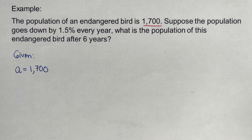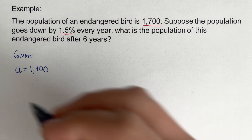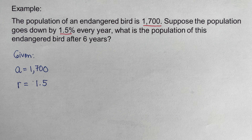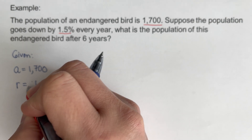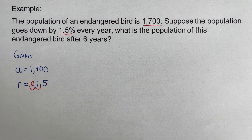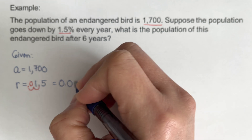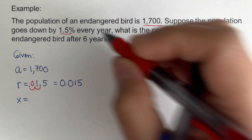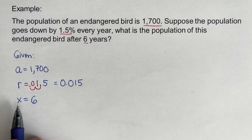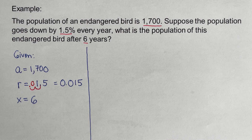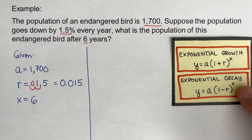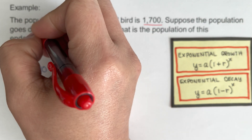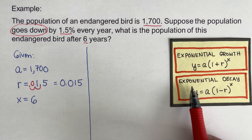We also have 1.5%, which represents the rate, so r equals 1.5%. We change this to decimal by moving two places to the left, or by dividing 1.5 by 100, giving us r equals 0.015. The problem says six years, so x equals six — the number of time periods. Since the population goes down, this is an example of exponential decay.